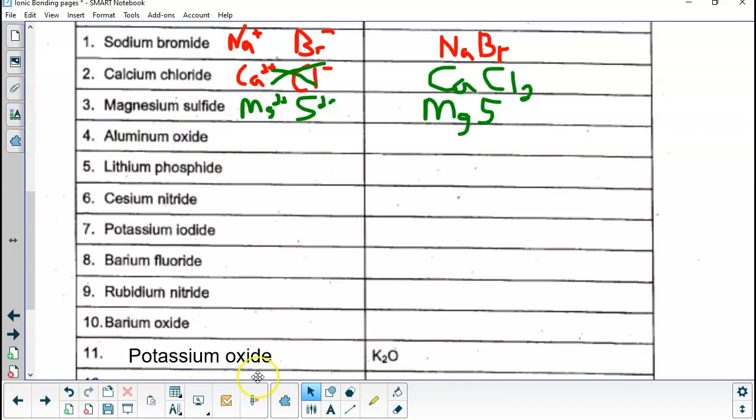Next one here, aluminum oxide. I can tell you, just because I do this a lot, that aluminum on the periodic table is going to be a plus three. Al plus three. Oxide is oxygen, and oxygen is a negative two. These numbers do not match, so I am going to crisscross them. I'm going to take the two on the oxygen and put it down at the bottom of the aluminum. I'm going to put the three on the aluminum down at the bottom of the oxygen. And my answer would be Al2O3.